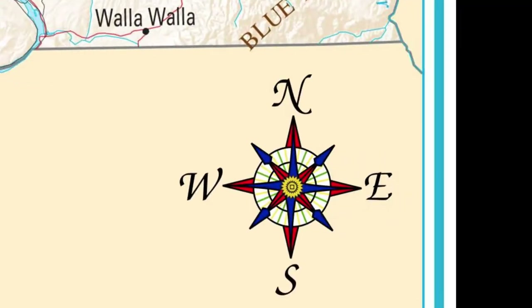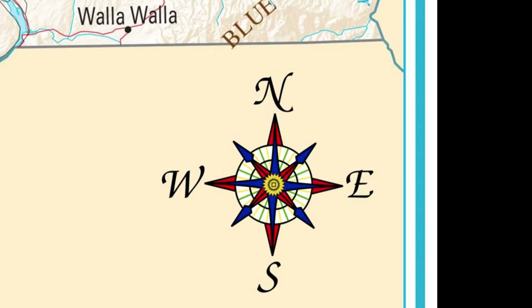This is a compass rose. It shows the directions north, south, east, and west on the map.